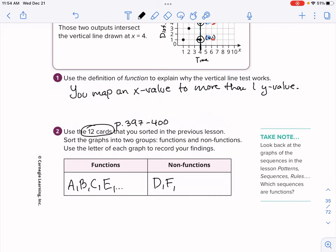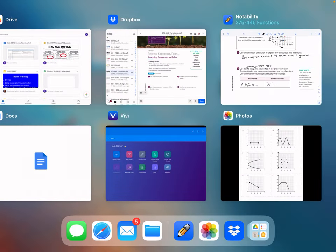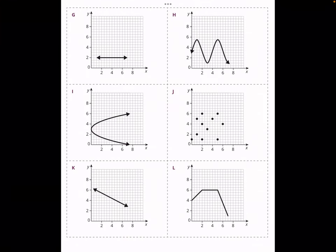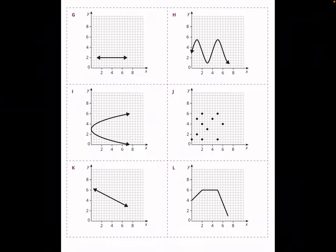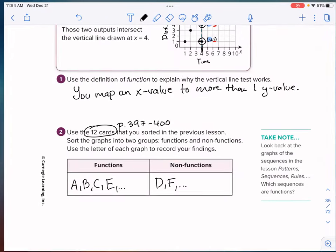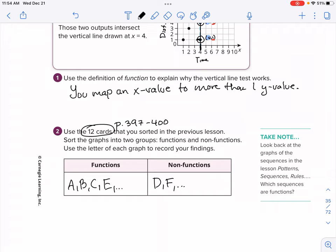Now I'd like for you to figure out the remaining cards — G, H, I, J, K, and L. Which of those are functions and which are not? Use the vertical line test to determine your answers, and let me know if you have questions.